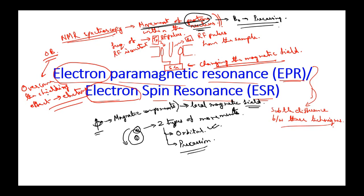In the case of NMR, the local magnetic field is due to the movement of electrons. However, in the case of EPR or ESR, the local magnetic field is due to the movement of the protons. So there is a huge similarity between NMR and EPR/ESR spectroscopic techniques.